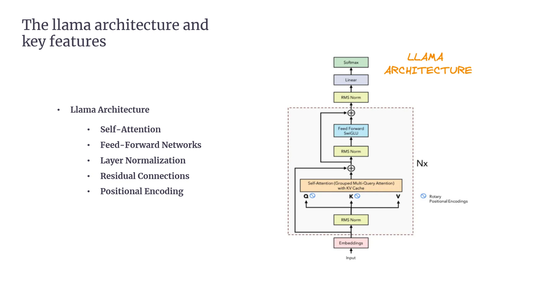Positional Encoding. LLAMA uses Rotary Positional Embeddings (RoPE), which is a modification of the traditional sinusoidal positional encoding. This helps the model better capture the relative positions of tokens, improving its performance on tasks requiring long-range dependencies.